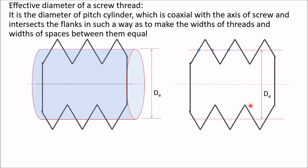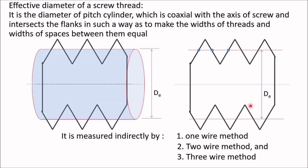Now this diameter cannot be determined directly; we use an indirect method. There are three methods: one wire method, two wire method, and three wire method. In this video, we will discuss the two wire method to measure effective diameter.